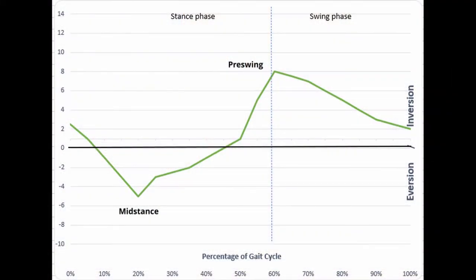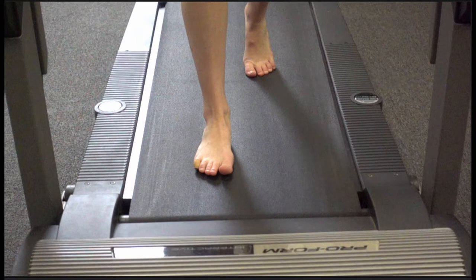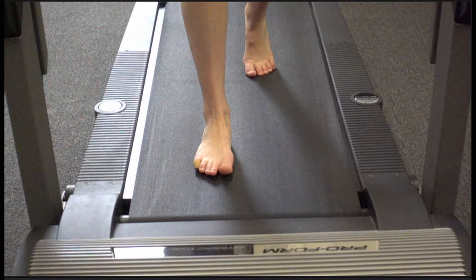The primary frontal plane motion of the ankle and foot is inversion and eversion. However, it is beneficial to talk about inversion and eversion in the larger context of supination and pronation. Supination is a combination of inversion, plantar flexion, and adduction. Pronation then would be a combination of eversion, dorsiflexion, and abduction. Both of these motions actually include multiple planes and multiple joints.